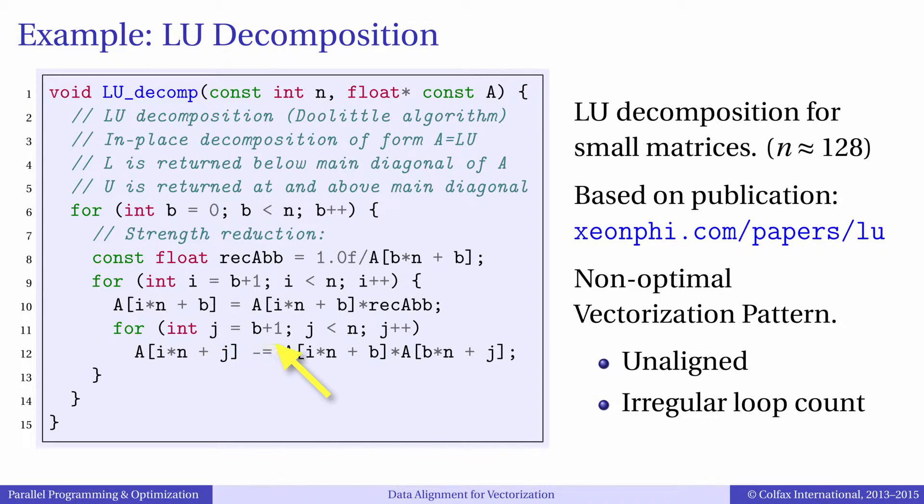J runs from B plus 1 to N. Let's assume that the matrix A is aligned to a 64-byte boundary and N is a multiple of 16. Does it mean that the loop in J always begins on aligned data? Obviously not. For B equals 0, this loop begins at J equals 1, which is 4 bytes away from an aligned boundary. Similarly, for B equals 2, 3 and so on, the loop is unaligned. Finally, for B equals 15, the loop will begin on aligned data, but after that again the data will be unaligned. So 15 times out of 16 we will have a peel loop here. This loop has an irregular vectorization pattern and we can get additional performance by regularizing it.